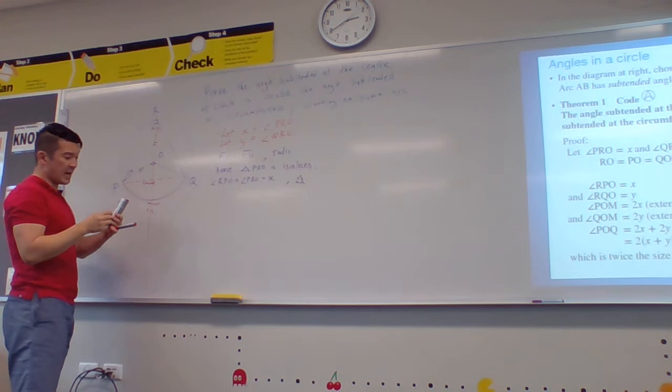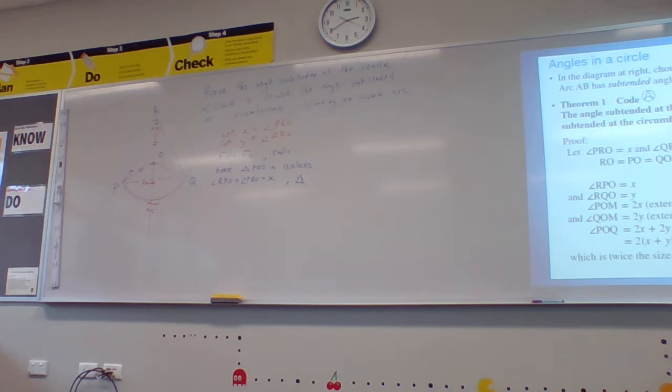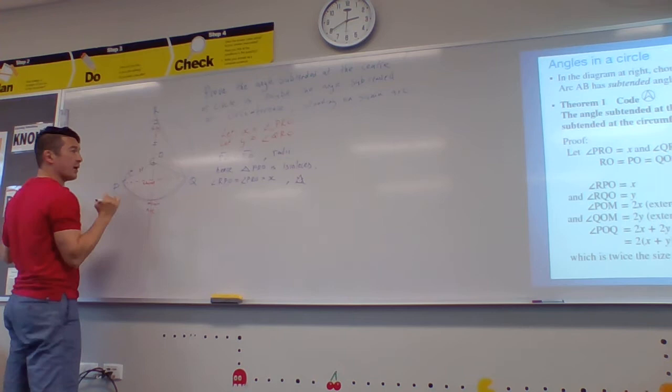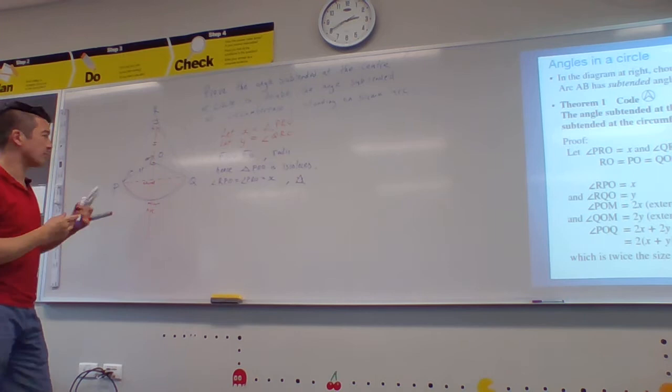So now I've got X. I've got that X, I've got that X. And then lastly, because I know there's 180 degrees in a triangle, I can say that this one here is 180 minus X minus X, which is minus 2X.